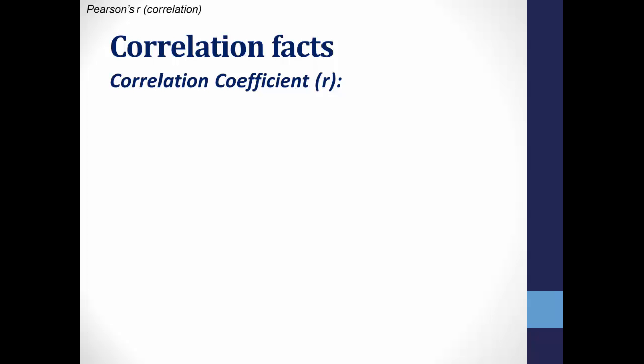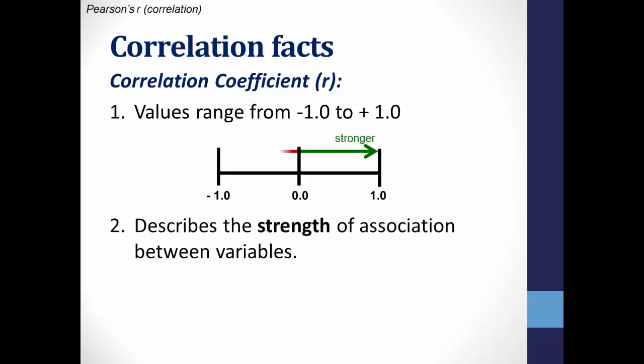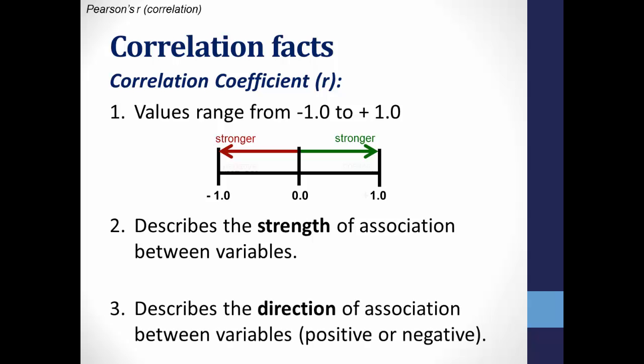When you finish calculating Pearson's R, you'll end up with values ranging from negative 1 to positive 1. The value describes the strength of association between variables. The closer the Pearson's R statistic is to 1, either negatively or positively, the stronger the relationship between the variables. And the positive and negative signs will tell you the direction of association between the variables.